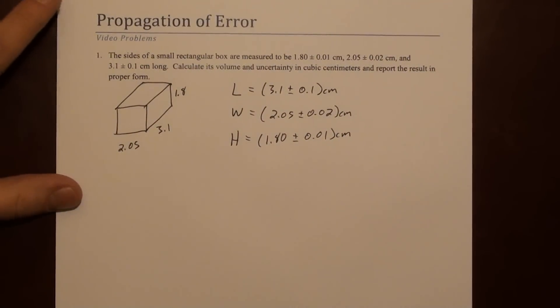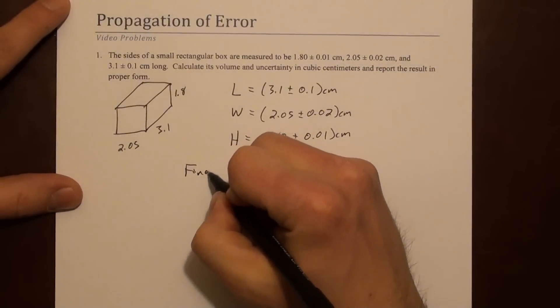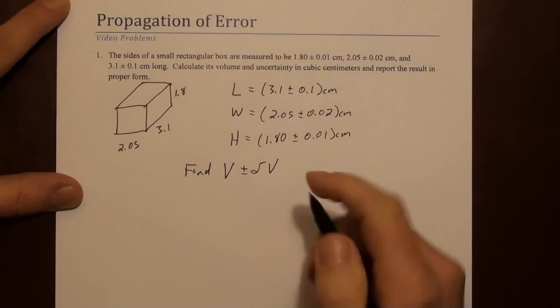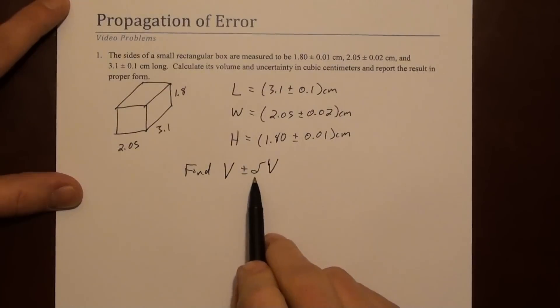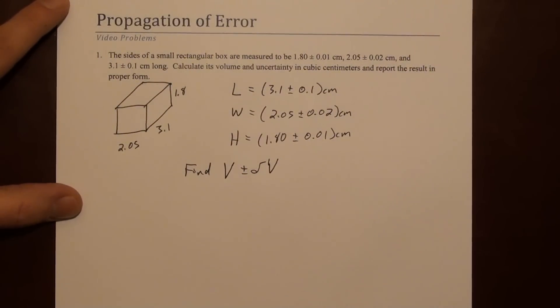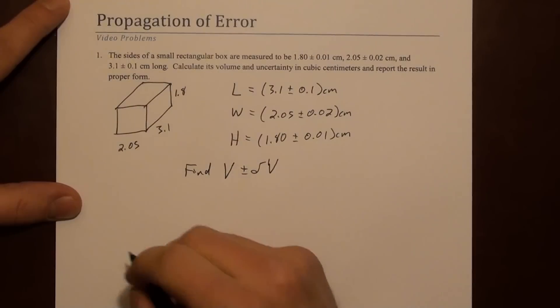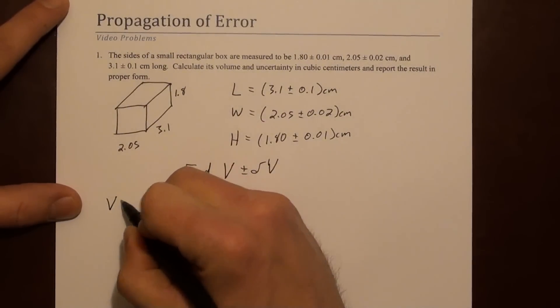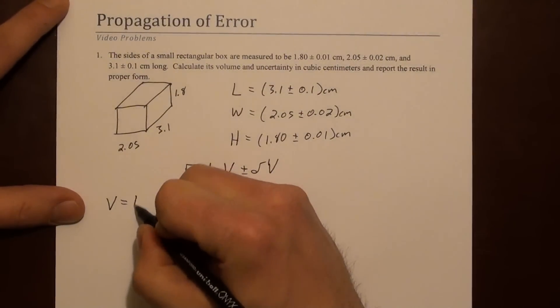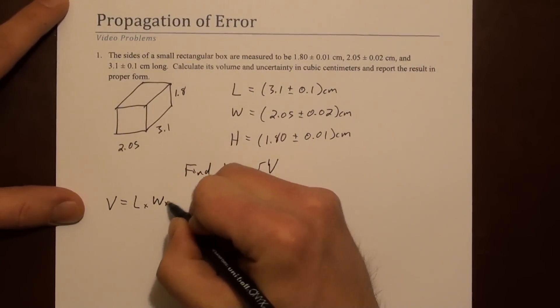We're asked to find the volume and the error in that volume. So this little delta here is the error in. Let's start by finding the volume. You may recall that the volume of a rectangular box is simply length times width times height.